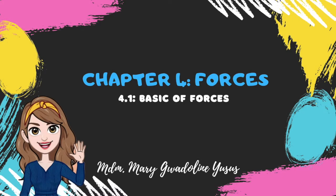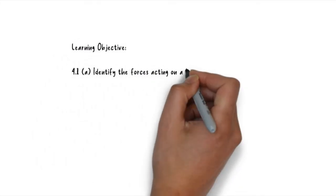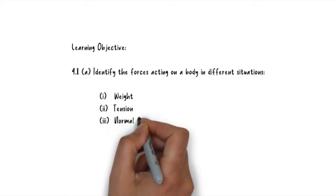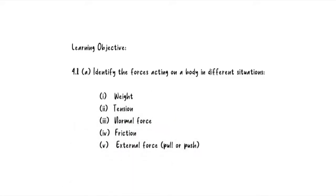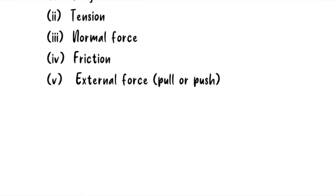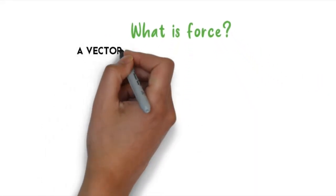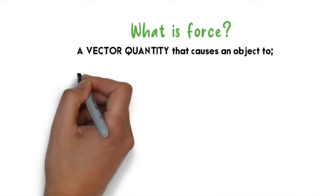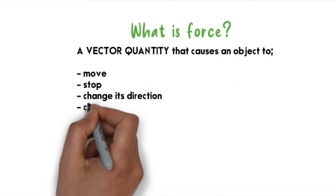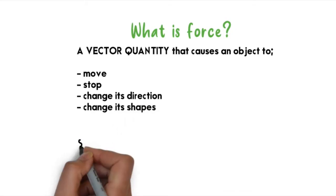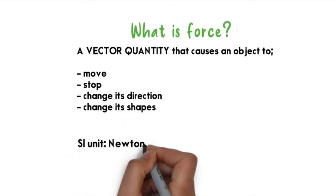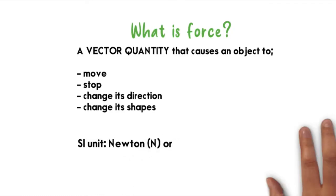In this video, I'm going to cover Chapter 4, which is Forces. The learning objective is to identify the forces acting on a body in different situations, including tension, normal force, friction, and external force. Force is a vector quantity that can cause an object to move, stop, change its direction, or change its shape. The SI unit for force is Newton, that is N or kg·m/s².